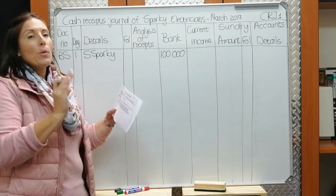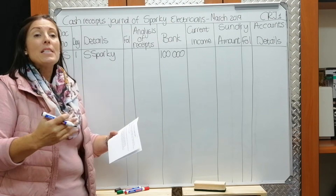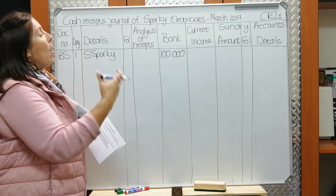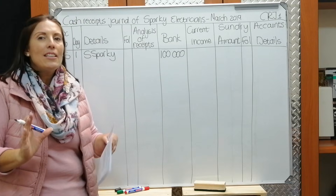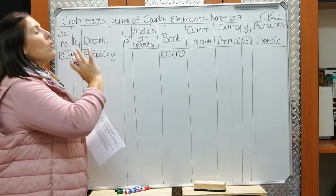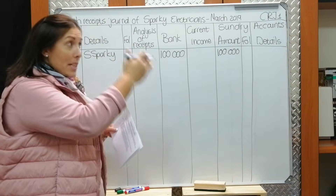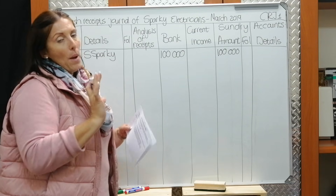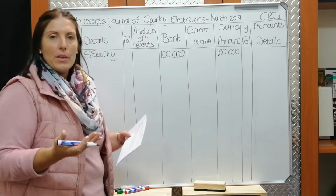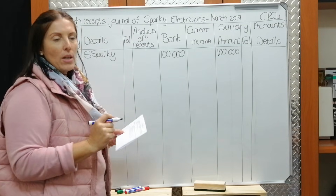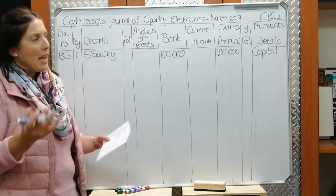We recorded it in the bank column. Now we need to say why we received the money — because the owner started the business and gave it as capital. We ask: is there a column for capital? No — we only have analysis, bank, and current income. For any transaction without its own column we go to sundry accounts. Under amount write R100,000. Leave the folio column for now. In the details column write 'Capital' — because the owner gave the money as capital.